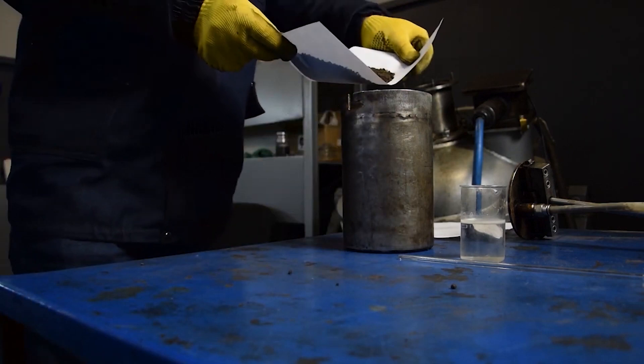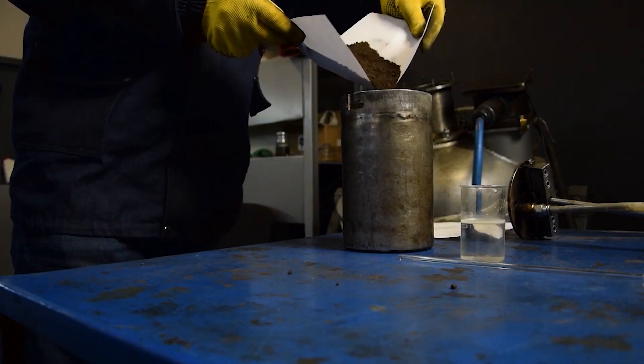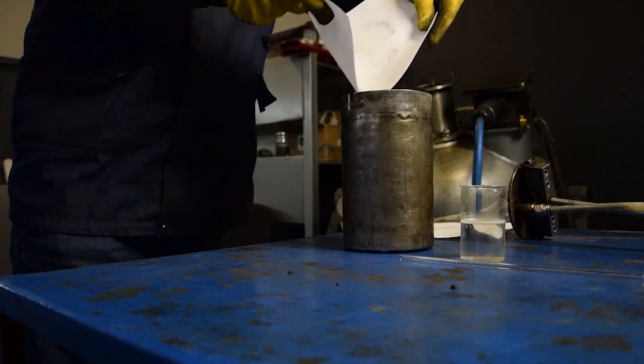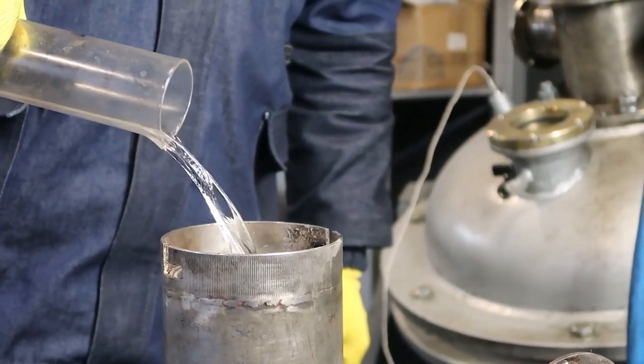We filled in the reaction container of 1.5 liter volume with 250 grams of peat and 500 milliliters of water, having previously dissolved 5 grams of alkali in water.